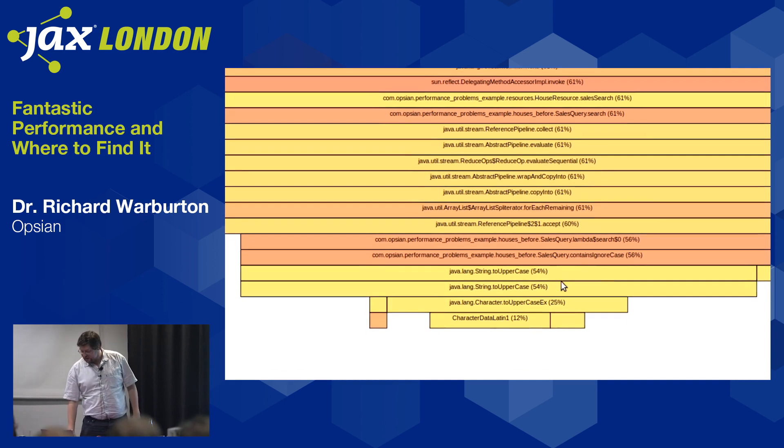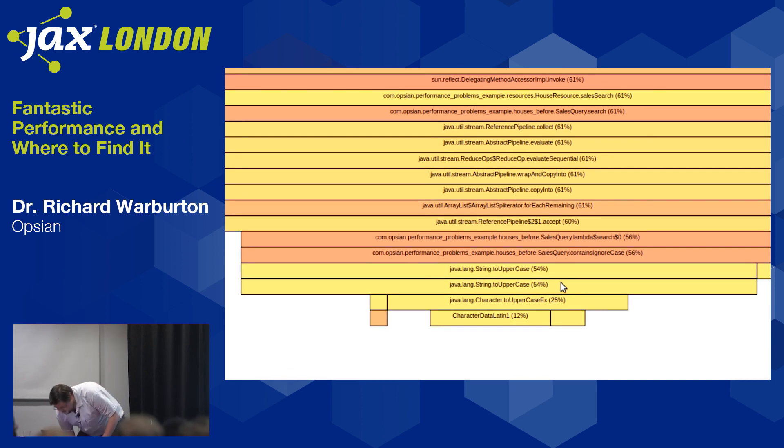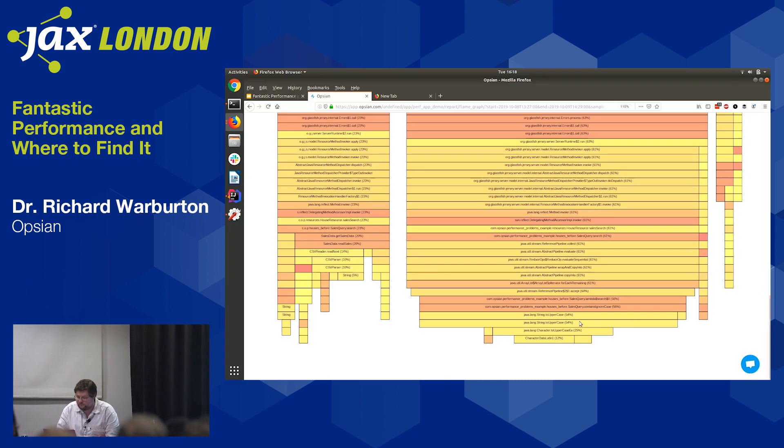Streams have lazy intermediate operations and eagerly evaluated terminal operations. If you see Java Streams code using a fluent API style, you'll often see the final method in the pipeline at the top of the stack trace — here it's ReferencePipeline.collect. The streams code spends most of its time calling a lambda expression in the search method of SalesQuery, which spends most of its time doing a containsIgnoreCase, which spends most of its time doing toUpperCase.